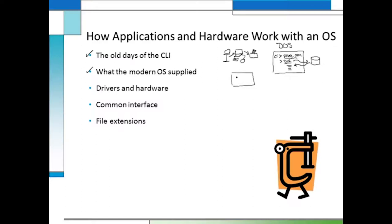What would happen is we'd see an icon — little pictures on the screen — of maybe a printer. We knew that if we moved our mouse, a little pointing device, over to that and clicked on it, that would do the same thing as finding the proper DOS command to print a document. That made life much easier because those visual commands translated into DOS commands, making you more productive without having to research, memorize, or struggle to figure out how to get things done.